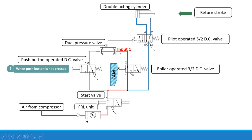The dual pressure valve will operate only when two inputs are present. Now as there is only one pressure input, it will not produce any output, so there will be no output at port two. The air — indicated by the blue line — will enter from one to two, and then from two the air will enter into the rod side of the double acting cylinder. The air from the other side will go from four to five to the atmosphere. So air is discharged to the atmosphere, and this is the first arrangement where we have obtained the return stroke — there is a retraction of the piston inside the double acting cylinder.